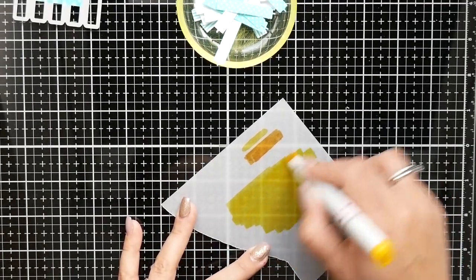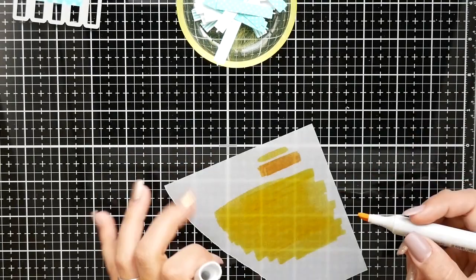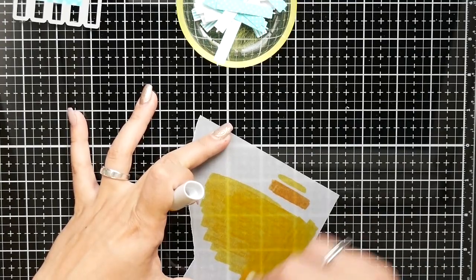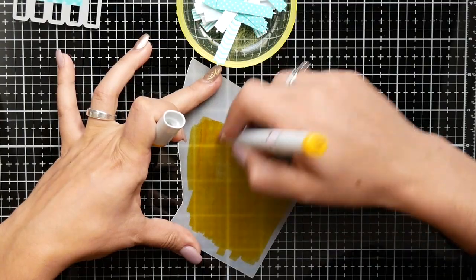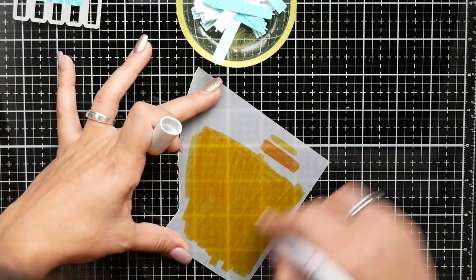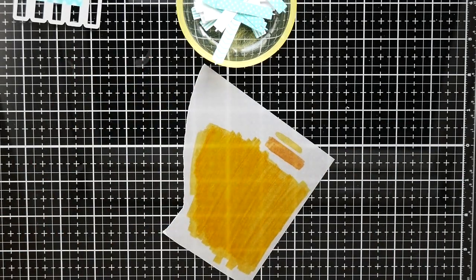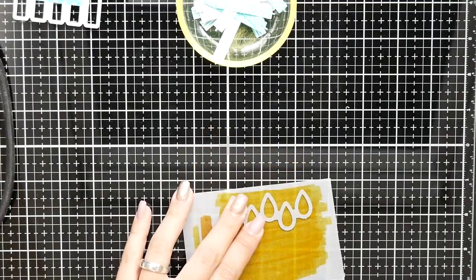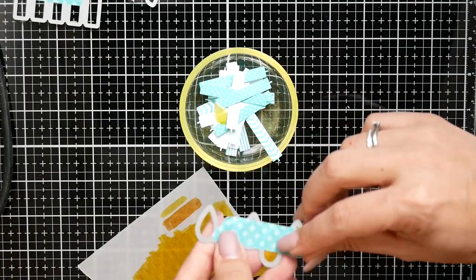For the candle flame I'm using vellum and I colored it with my Copic marker. I'm using a pretty dark yellow because on vellum colors always tend to lighten. I'm coloring a piece that I will die cut my flames from later. You can see I'm die cutting my flames and all the pieces I put in a little jar so they stay together.